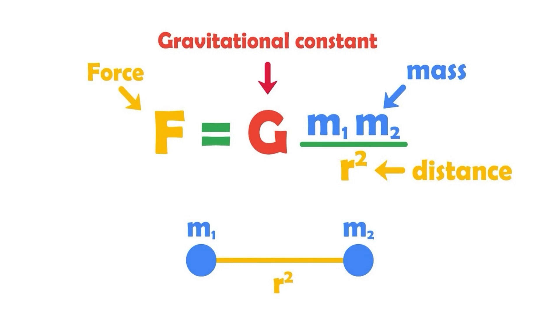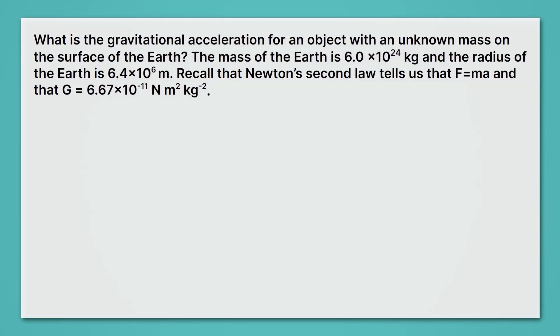And yet, we know that the gravitational force does depend on mass. Here in the blue, we see the masses. What's going on? Well, let's solve this paradox. This problem says, what is the gravitational acceleration for an object with an unknown mass on the surface of Earth? So we don't even know its mass, and yet we're going to find its acceleration, proving that the mass doesn't matter.